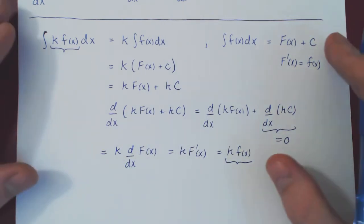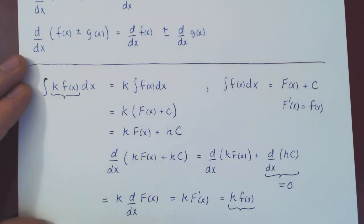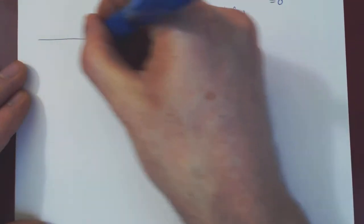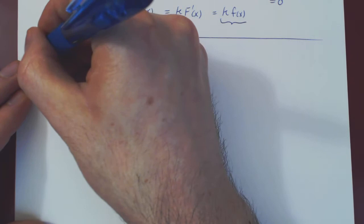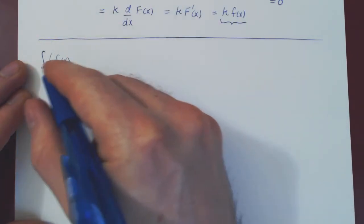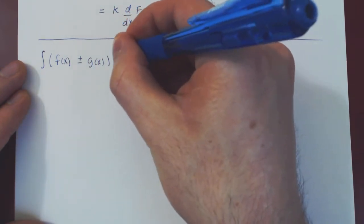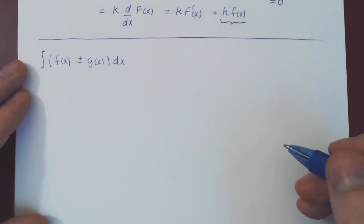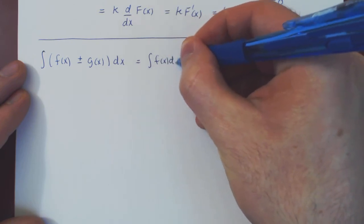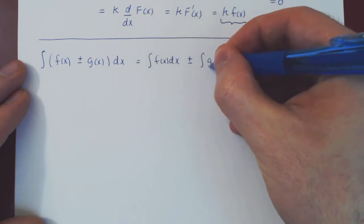Let's look at the second property, which is the same as the sum/difference rule for integration. If we integrate f of x plus or minus g of x dx, the claim is that this equals the integral of f of x dx, plus or minus the integral of g of x dx.